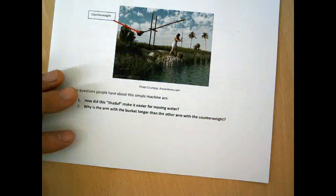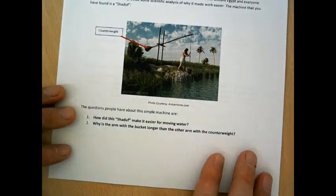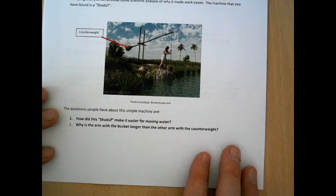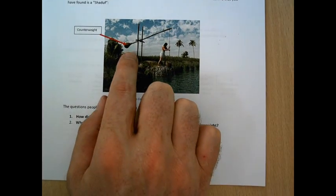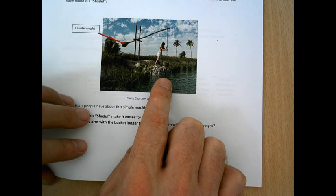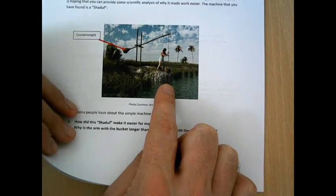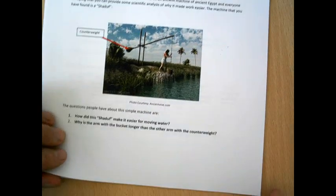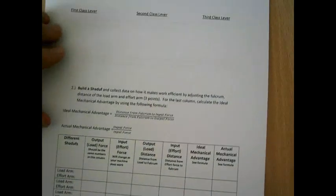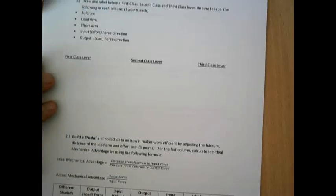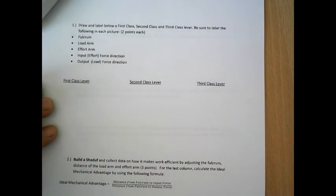Our blue-level lab is one on the Shadiff, which is a machine they used to get water out of a river. You have a counterweight on one side and a bucket that holds water on the other. Essentially, this is a lever. Students will look at some examples of levers and be able to explain where the different classes of lever appear.